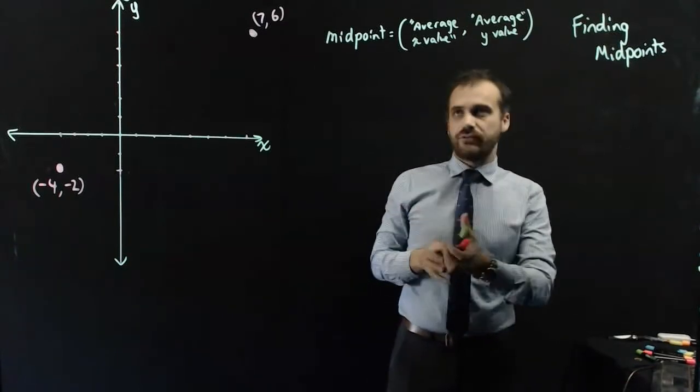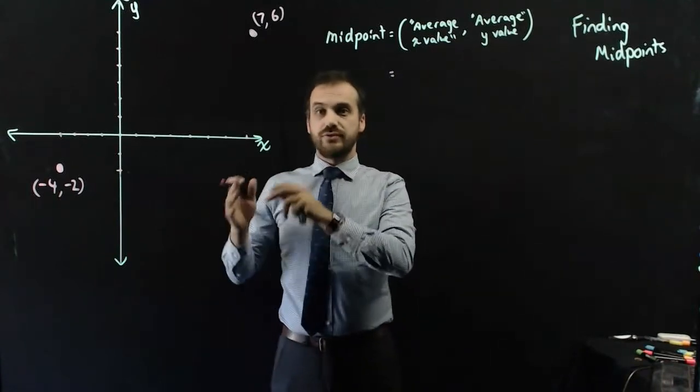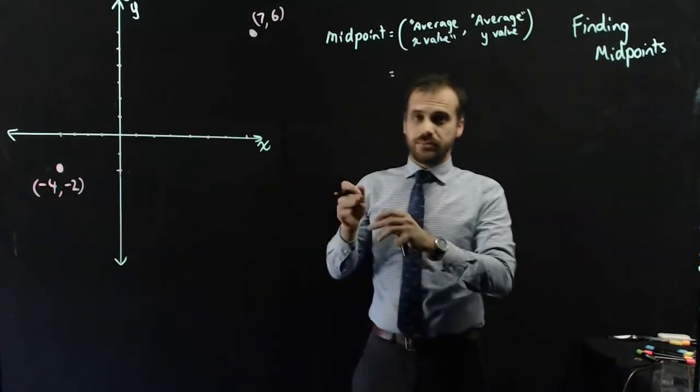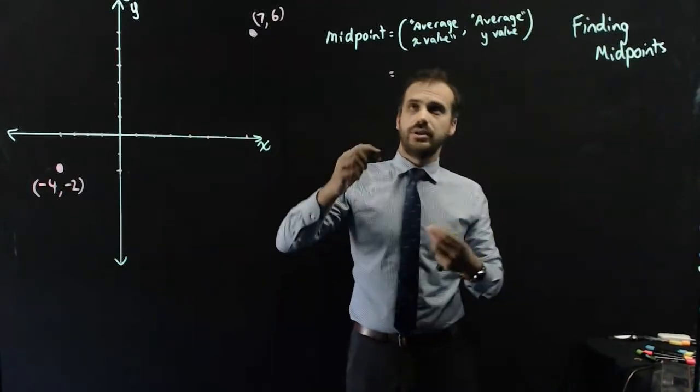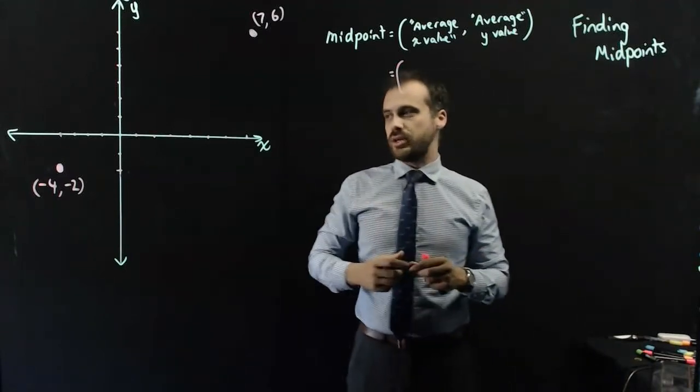How are we going to find an average? Well, you should know how to find an average. If we want to find an average of two things, we add the two things, and then we divide by the number of things, 2. Now, let's name these points before we get too excited.